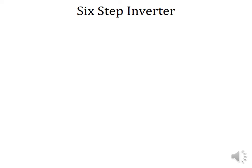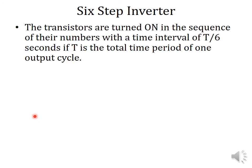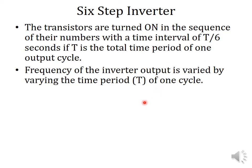If we operate as a six-step inverter, the transistors are turned on in the sequence of their numbers with a time interval of T/6, where T is the total time period of one cycle. The frequency of the inverter output is varied by varying the time period T. The six-step inverter is capable of controlling the frequency of the output voltage only.